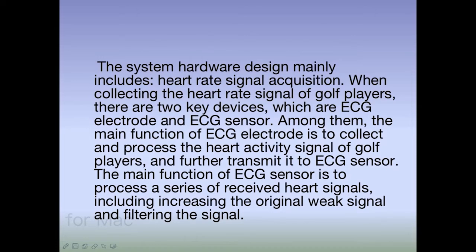The system hardware design mainly includes heart rate signal acquisition. When collecting the heart rate signal of the golf players, there are two key devices: the ECG electrode and the ECG sensor. The main function of the ECG electrode is to collect the cardiac activity signal of the golf players and further transmit it to the ECG sensor. The main function of the ECG sensor is to process a series of received heart signals, including amplifying the original signal and filtering the signal.